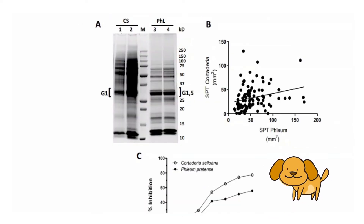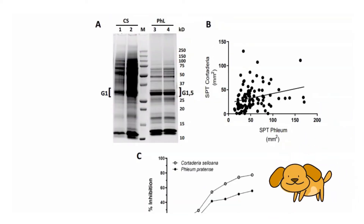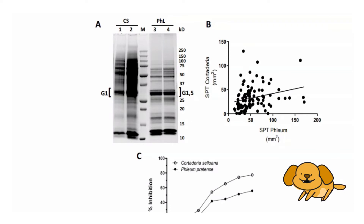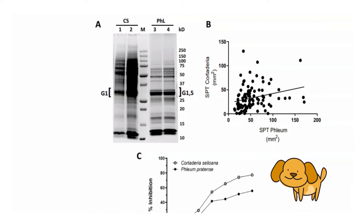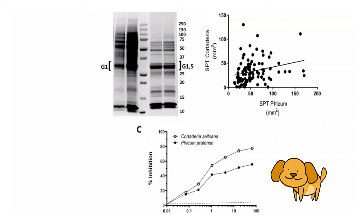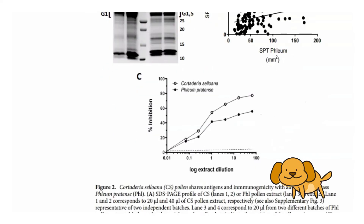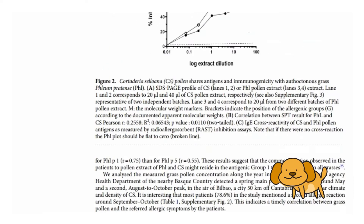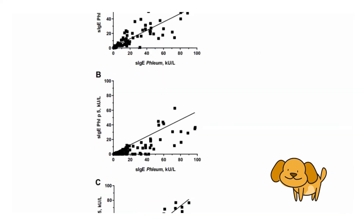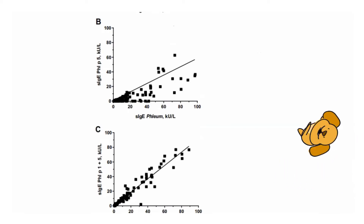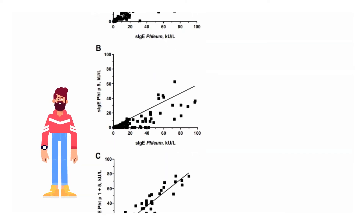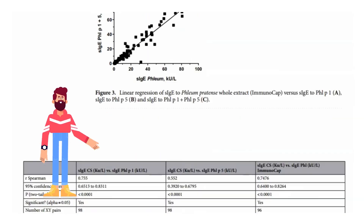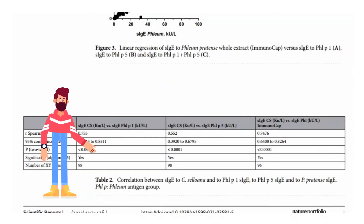The researchers determined the skin reaction and the presence of specific IgE antibodies to Cortaderia selloana or to a typical autochthonous grass, phleum pratense. Seasonal symptoms with reported grass pollen counts in the area were also compared. The research strongly suggests that Cortaderia selloana can cause respiratory allergies at a similar extent to the local grasses.